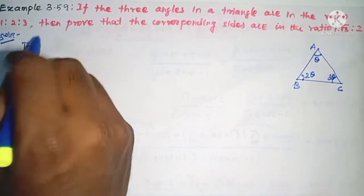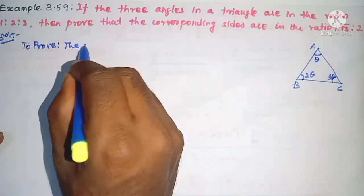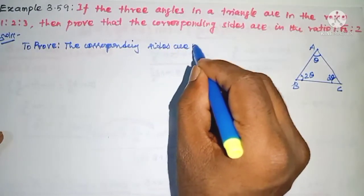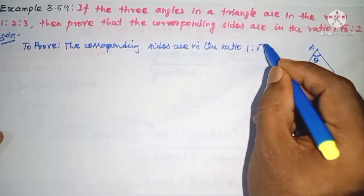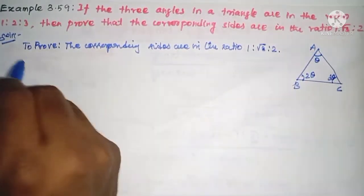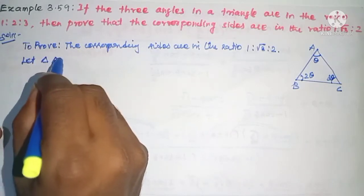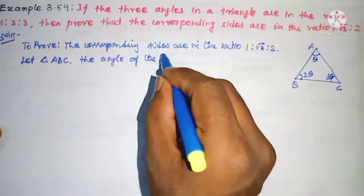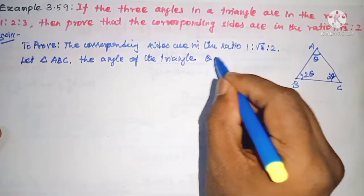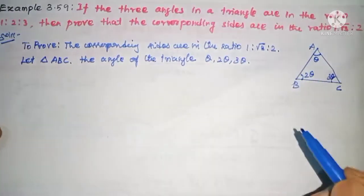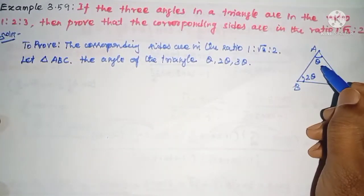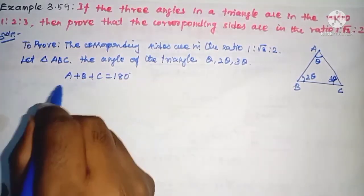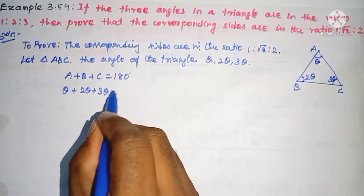We are going to prove that the corresponding sides are in the ratio 1:√3:2. The angles of the triangle are θ, 2θ, and 3θ. From the basic property, the sum of angles is 180°. So A + B + C = 180°, meaning θ + 2θ + 3θ = 180°.